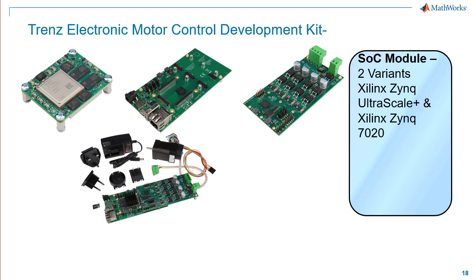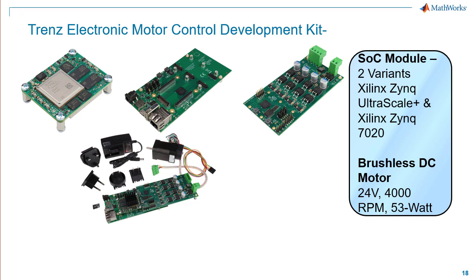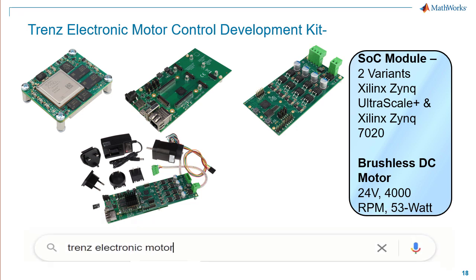Also included in this kit is a 24V rated, 4000 RPM, 53W brushless DC motor, which includes a 1250 REF counter single-ended encoder. For more information on the Trenz kit, please visit the link provided or Google Trenz Electronic Motor Development Kit.